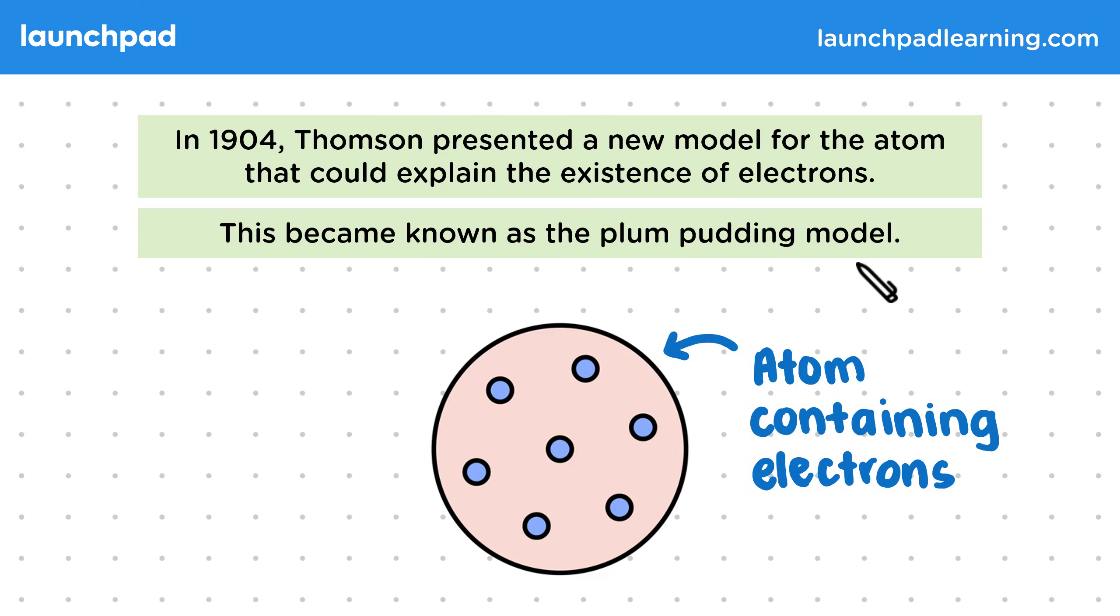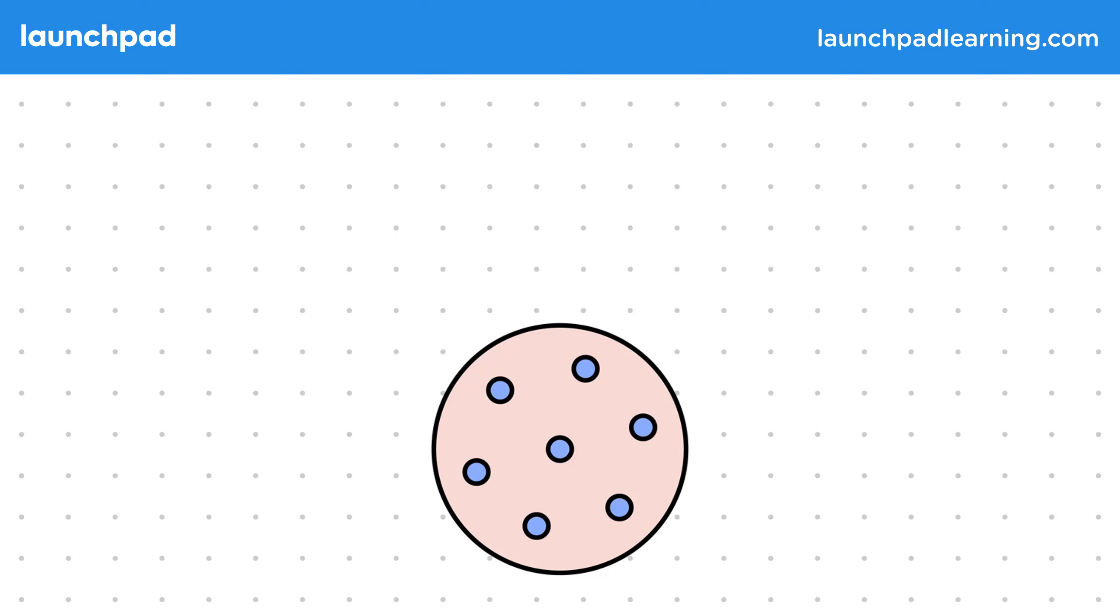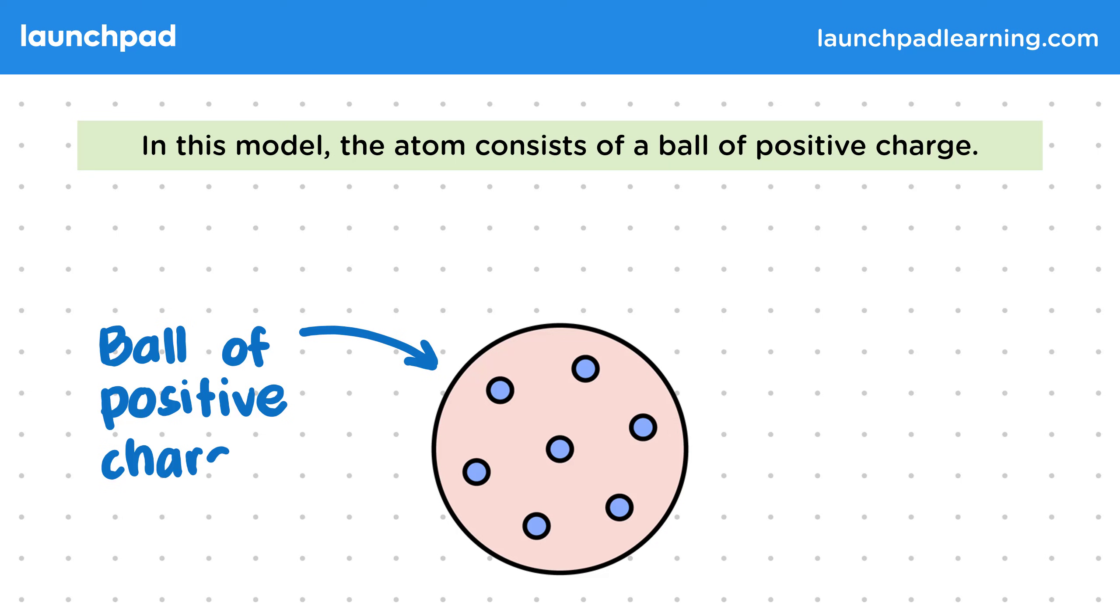How exactly are the electrons arranged? In this model, the atom consists of a ball of positive charge. It was known that there was some sort of positive charge in the atom, as it had no overall charge.